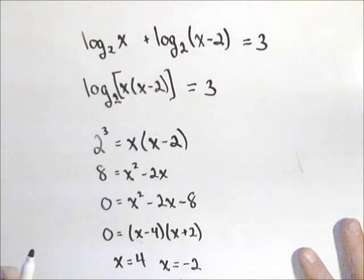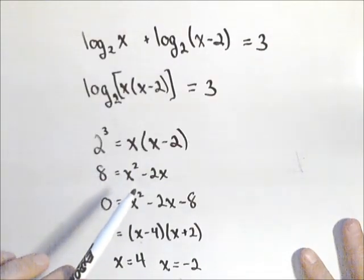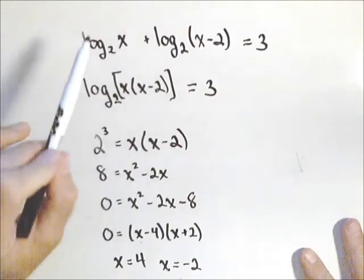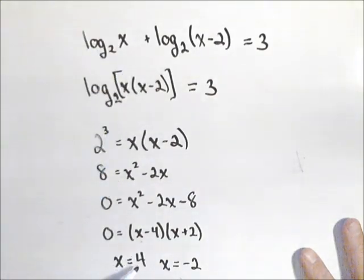Now, there's one last step you have to do when you solve an equation like this. Because we turn this into an exponential function, we lose the domain restrictions on logs. Remember, you cannot take log of zero or a negative number, so we need to check our answers to make sure that they're okay.